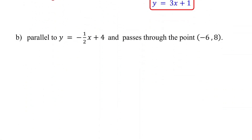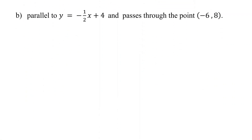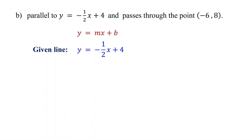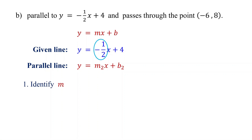Now let's try an example with a negative fractional slope. We will also convert the equation to standard form after writing it in slope-intercept form. The given line is y equals negative 1 half x plus 4, which is in slope-intercept form. Represent the parallel line as y equals m2x plus b2. First, identify the slope of the given line. It is negative 1 half, so m equals negative 1 half.